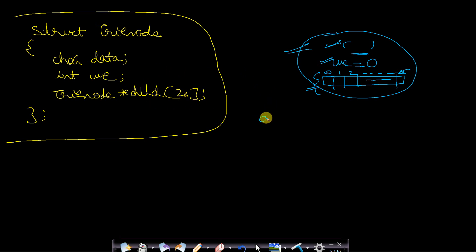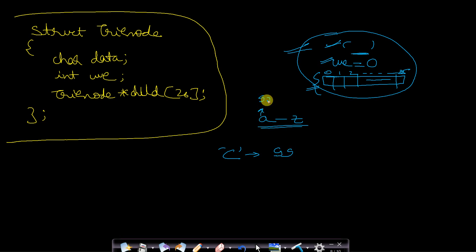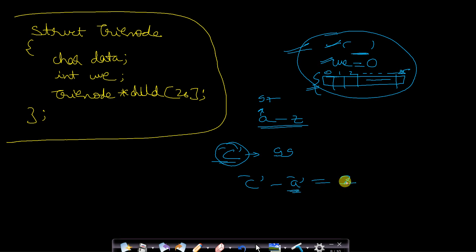How do you determine which child pointer to look for? Let's say you are taking characters from small 'a' to small 'z'. Suppose you have character 'c' — its ASCII value is 99, and 'a' is 97. To find which child it belongs to, you subtract the base value 'a', getting 2. So if a node has a child with value 'c', you make a pointer from the second index pointing to that child node with value 'c'.